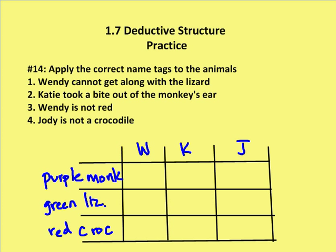We're given that Wendy cannot get along with a lizard, so Wendy cannot be the lizard herself — Wendy is not the green lizard. Wendy is identified by W, Katie by K, and Jody by J. We have a purple monkey, a green lizard, and a red crocodile, and we need to find out who is Wendy, Katie, and Jody. Katie took a bite out of the monkey's ear, so Katie is not the monkey. Wendy is not red, so she's not the red crocodile. And Jody is not the crocodile.